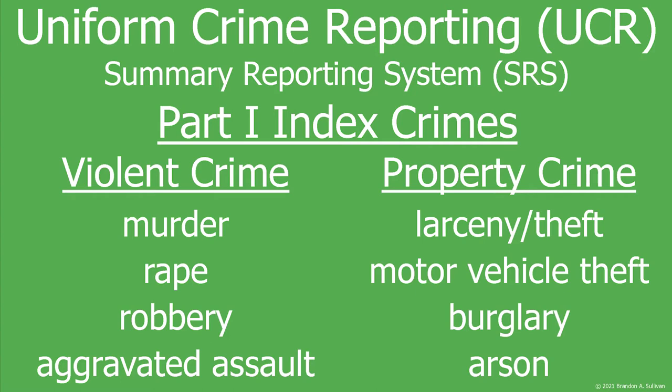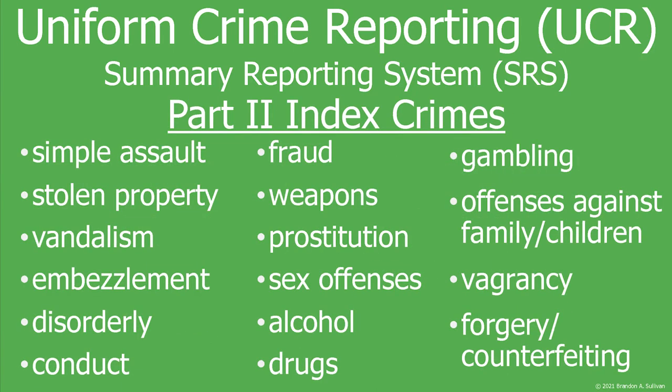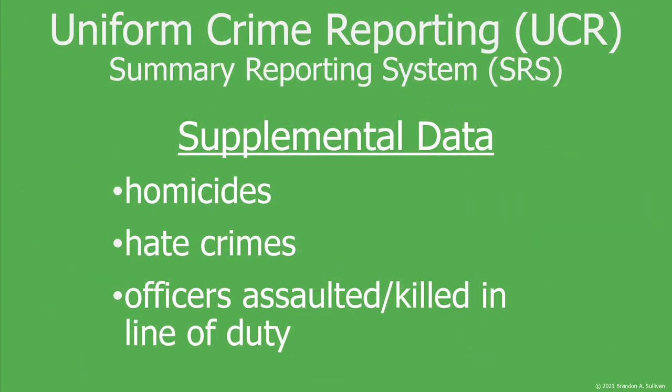The Part 1 Index Crimes include four violent crimes — murder, rape, robbery, and aggravated assault — and four property crimes — burglary, larceny, motor vehicle theft, and arson. Other crimes are captured as Part 2 Index Crimes, although far less is known about them and their reporting is more widely inconsistent. There is also additional supplemental data on homicides, hate crimes, and officers killed and assaulted in the line of duty.